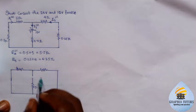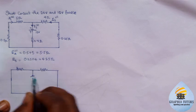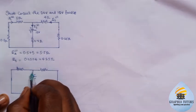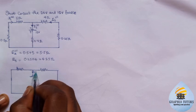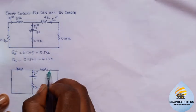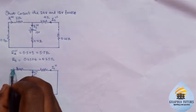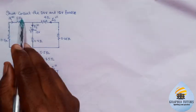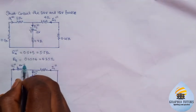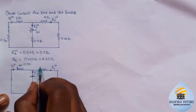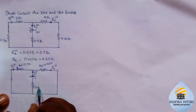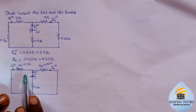Similarly, Rb triple-prime covers the path where the same current I2 flows through 0.25 ohms and 4 ohms in series: Rb triple-prime = 0.25 + 4 = 4.25 ohms. After redrawing: Ra = 5.5 ohms, Rb = 4.25 ohms, and 0.4 ohms remain, with the 18 volt source.